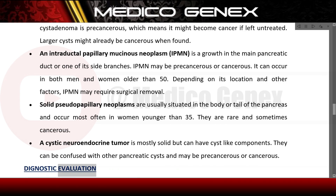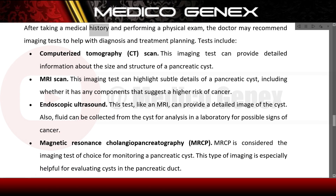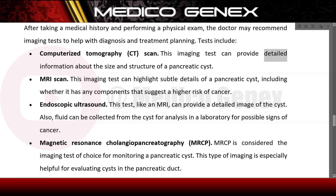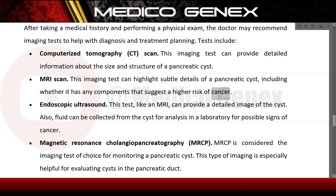After taking a medical history and performing a physical exam, the doctor may recommend imaging tests. A CT scan can provide detailed information about the size and structure of a pancreatic cyst. An MRI scan can highlight subtle details of a pancreatic cyst, including whether it has components that suggest a higher risk of cancer.